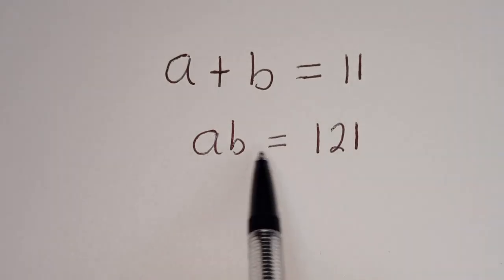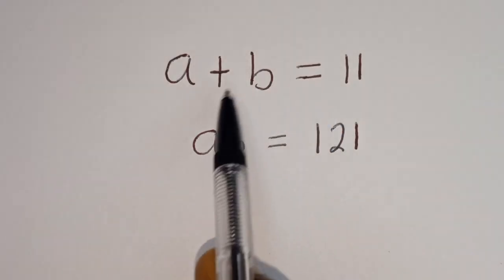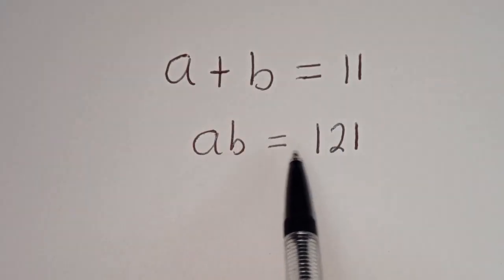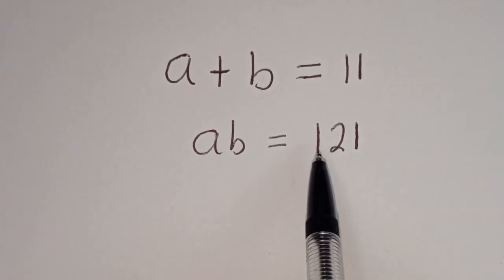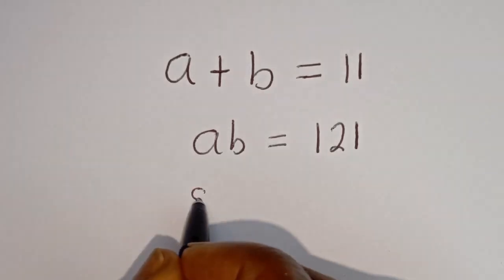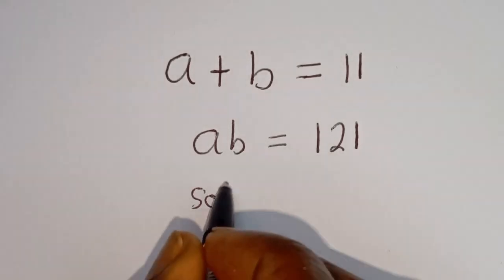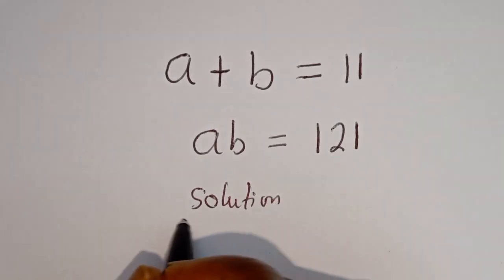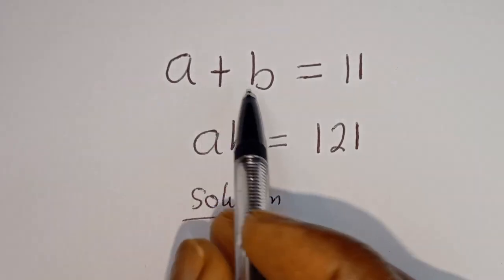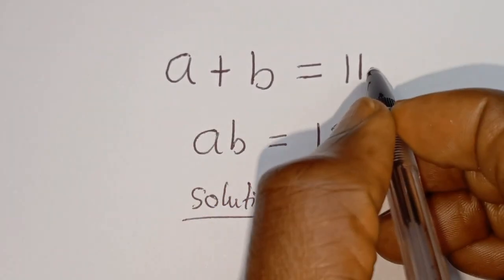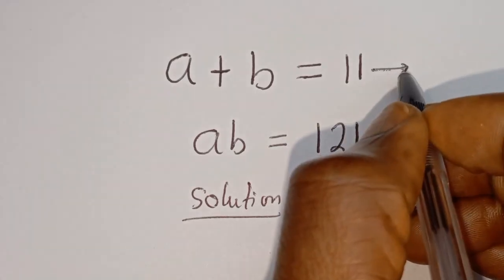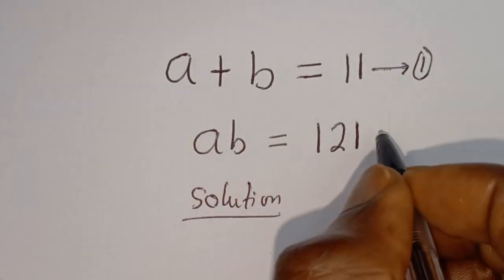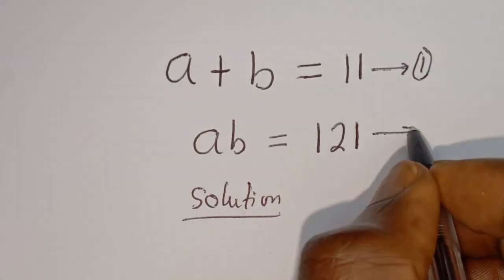Hello. How to solve for A and B in this equation? A plus B is equal to 11. AB is equal to 121. Solution. A plus B is equal to 11 — let's call this equation 1. AB is equal to 121 — let's call this equation 2.